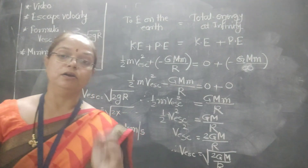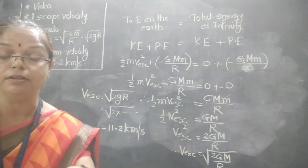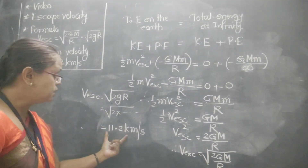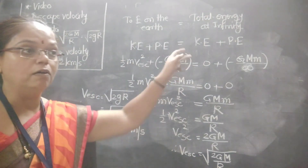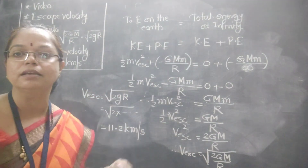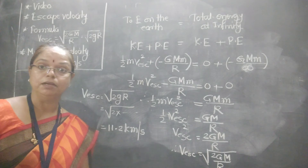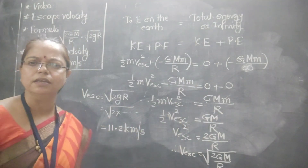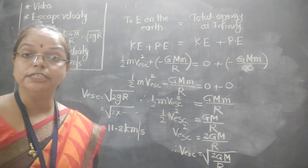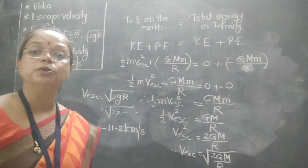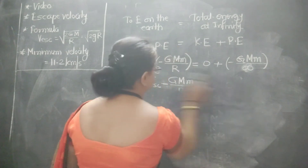The escape velocity is 11.2 kilometers per second. That means in one second, the rocket covers 11.2 kilometers. If this initial velocity is given to an object, it will overcome the gravitational force and escape into space.